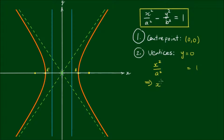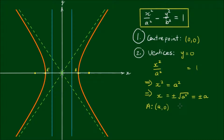So x squared equals a squared. Solving for x we get x equals plus or minus the square root of a squared, which equals positive or negative a. So the x-coordinate of the vertices takes on either positive a or negative a. The vertex A has coordinates (a, 0) and A' has coordinates (−a, 0).